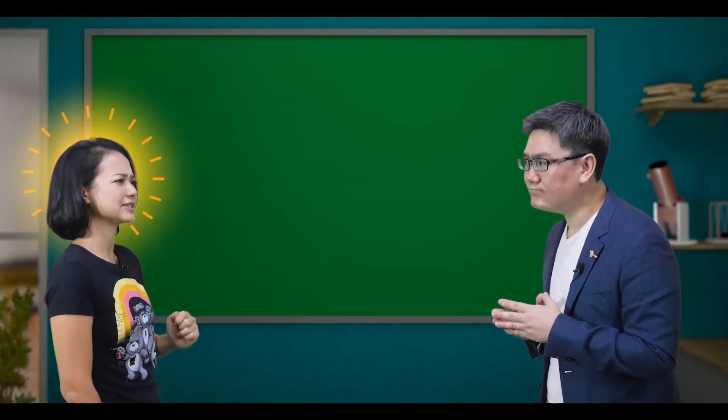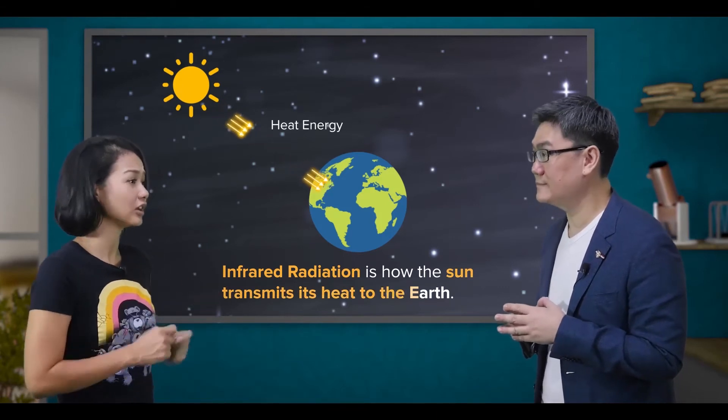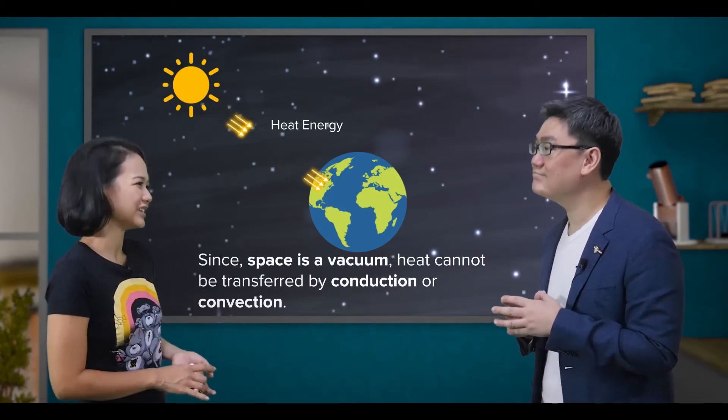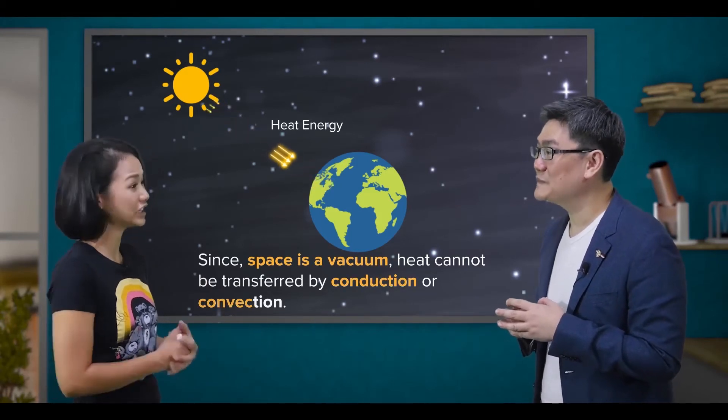That makes sense. That is how the sun transmits its heat to the Earth. Am I right? I mean, since space is a vacuum, you can't transfer heat by conduction or convection.